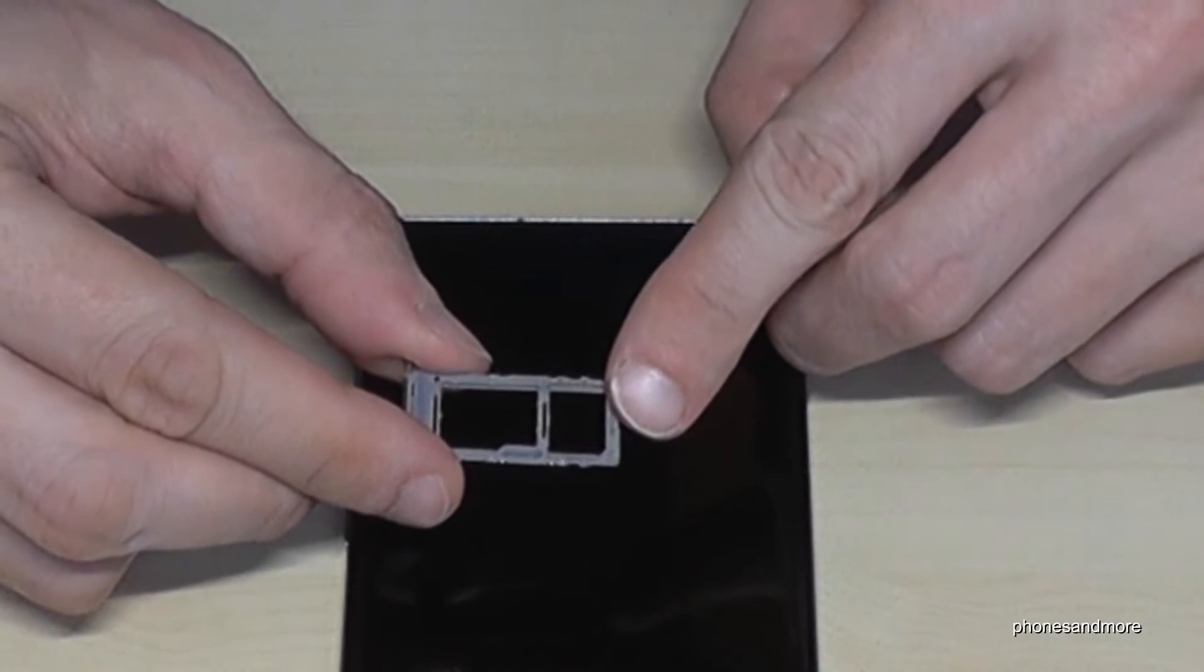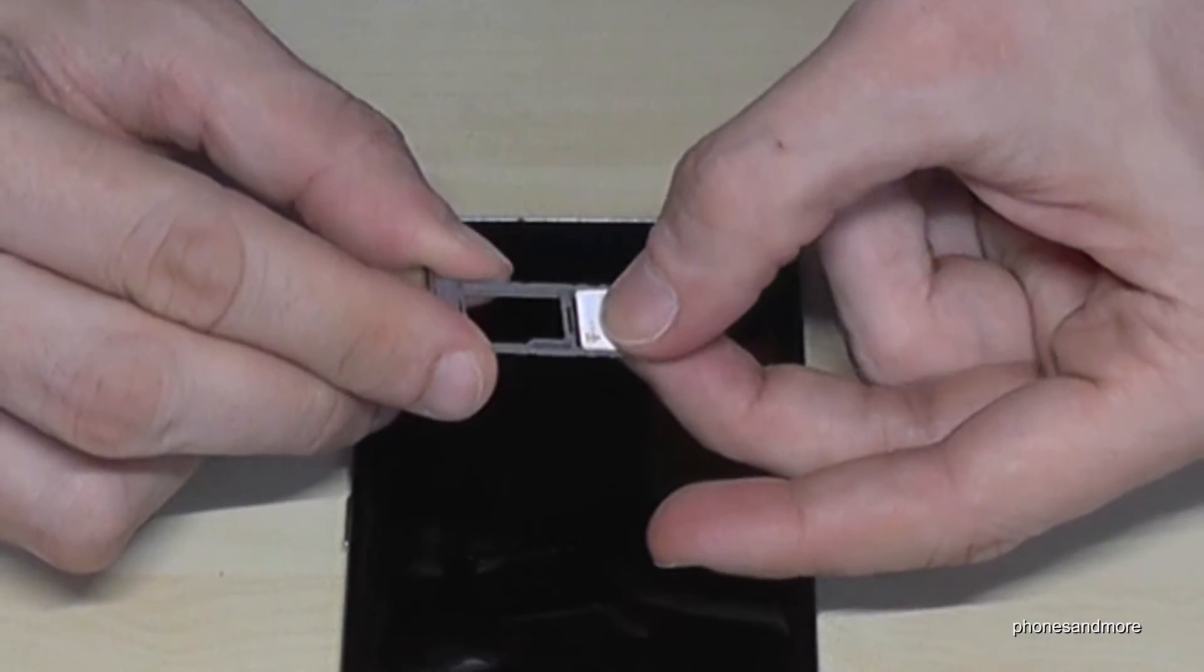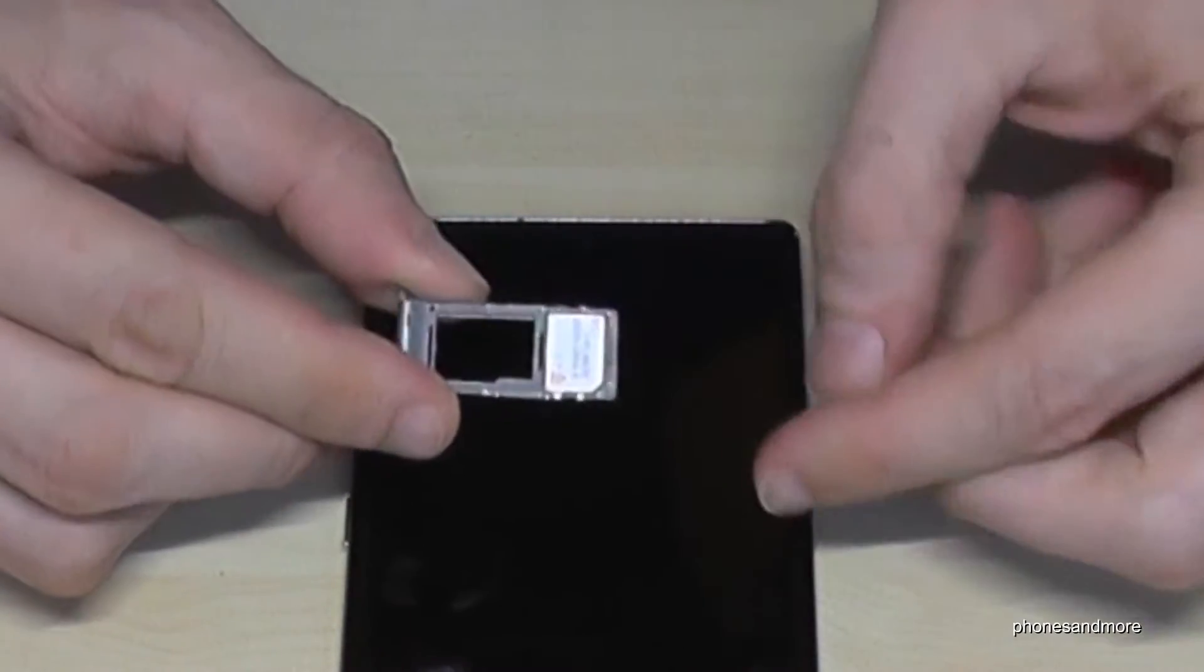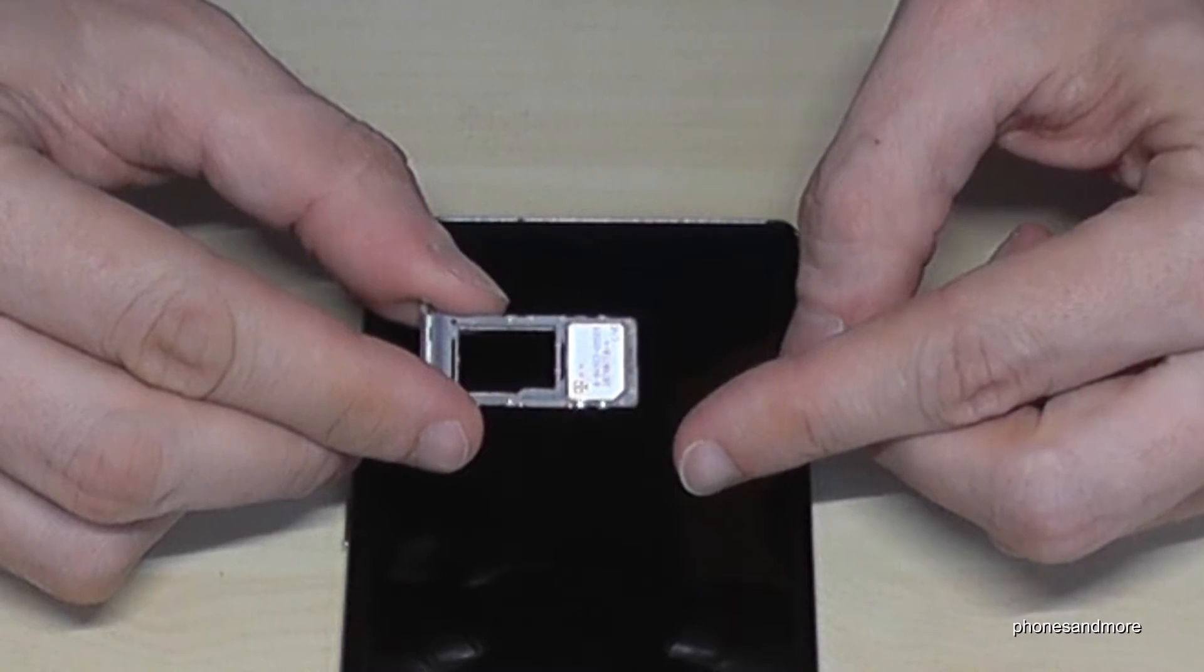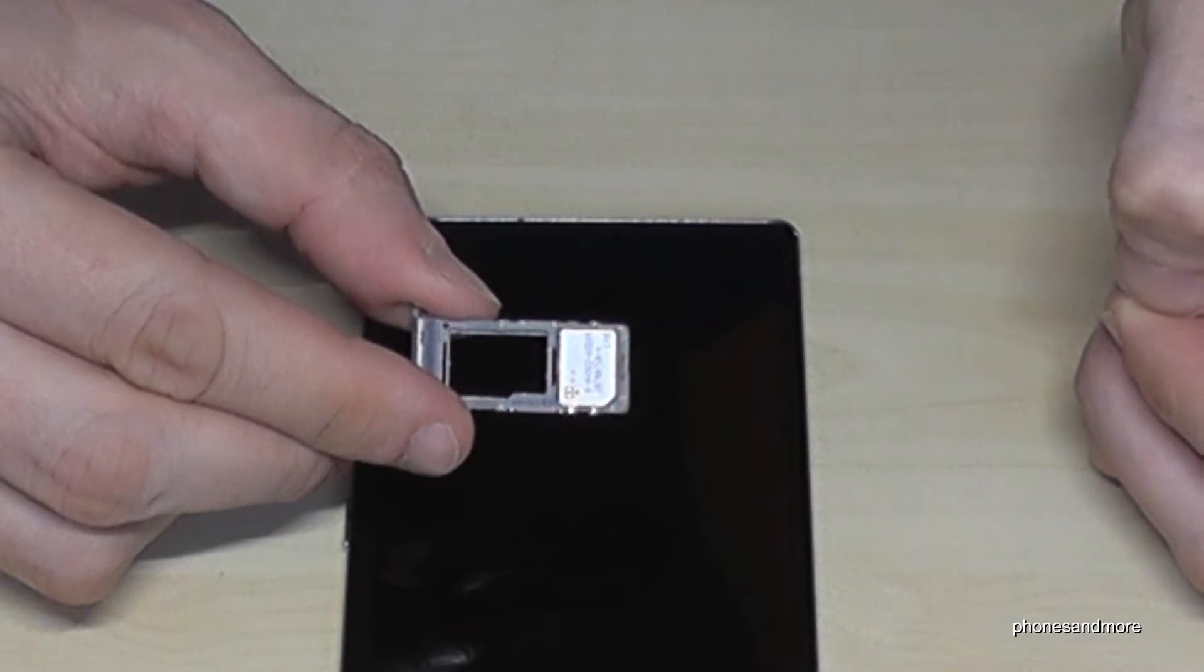Okay, in the first position you enter a nano SIM card like this. The missing corner aligns with the missing corner, and the contacts are below.